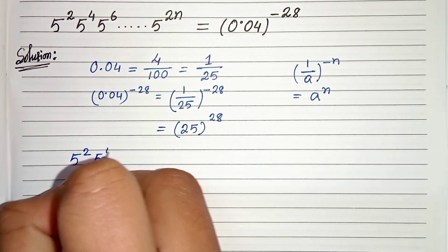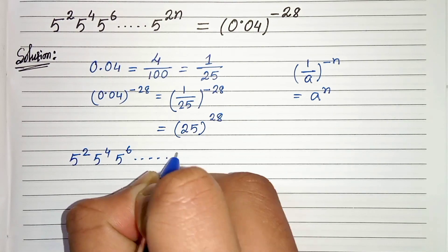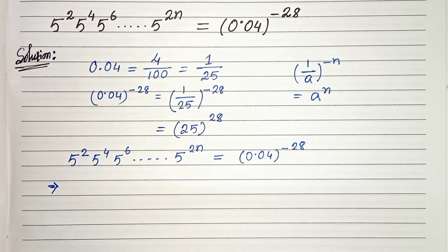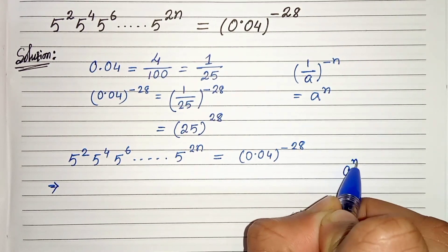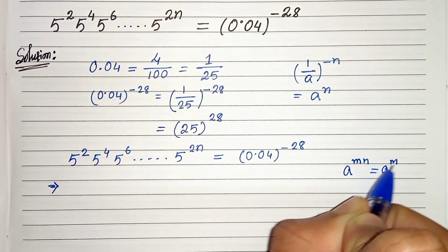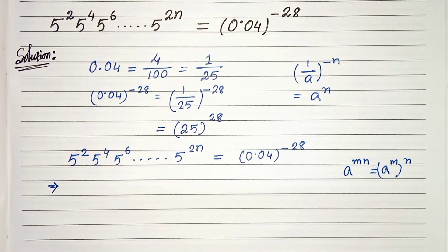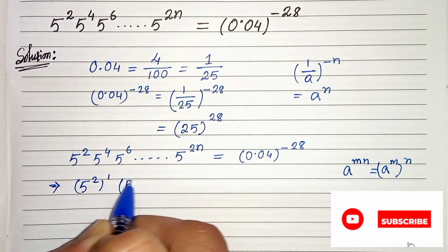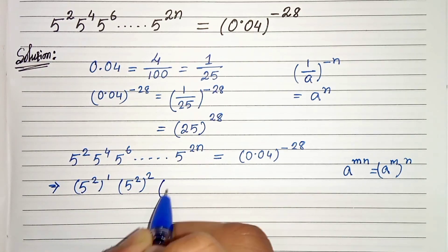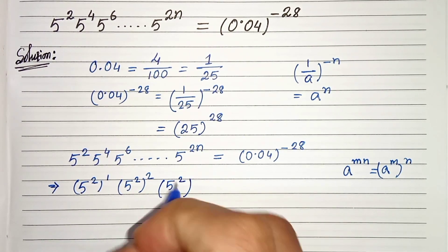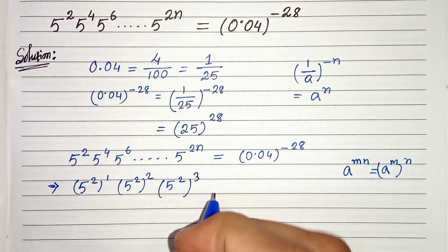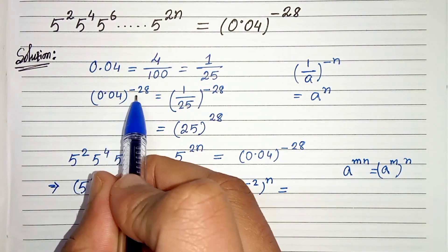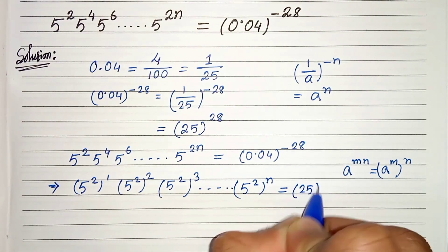So 5 squared times 5 to the power 4 times 5 to the power 6, and so on, times 5 to the power 2n equals 0.04 whole to the power minus 28. We know that a to the power mn can be written as a to the power m whole to the power n. So we can write 5 squared whole to the power 1, then 5 to the power 4 as 5 squared whole to the power 2 — since 2 times 2 is 4 — and 5 squared whole to the power 3 — since 3 times 2 is 6 — and so on, up to 5 squared whole to the power n.